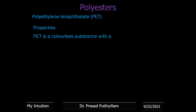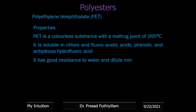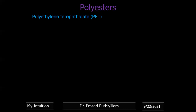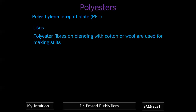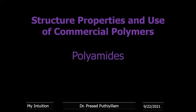PET properties: it is a colorless substance with a melting point of 265°C. It is soluble in chlorotrifluoroacetic acid, phenol, and anhydrous hydrofluoric acid. It also has good electrical insulation properties. Uses: polyester fibers blended with cotton or wool are used for making clothing. The main application of PET is electrical insulation.